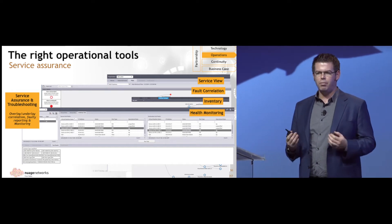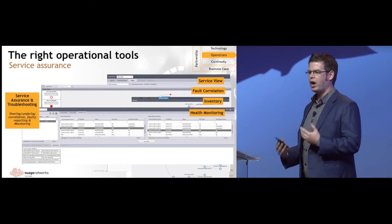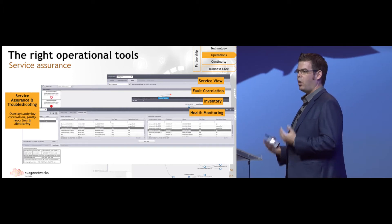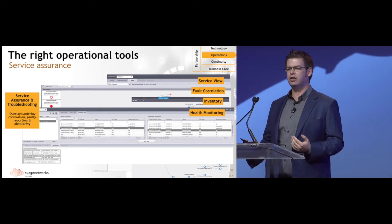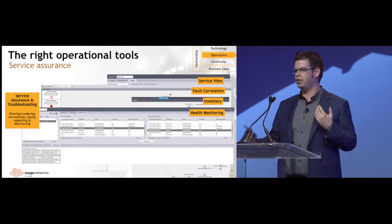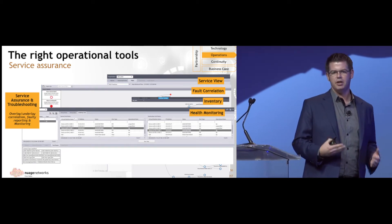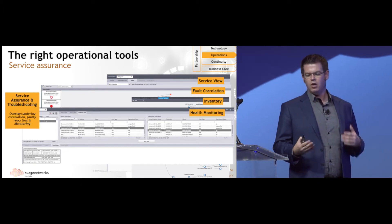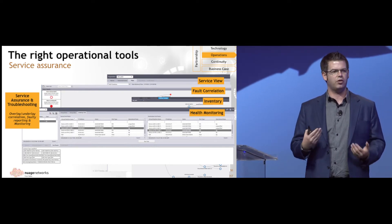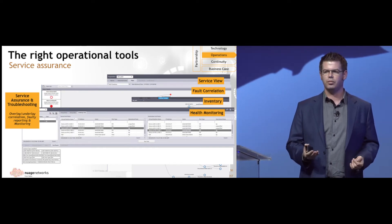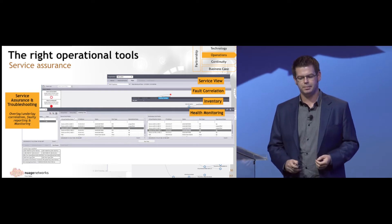What happens if a port goes down? What happens if a switch or a router fails? What's the impact on the overlay service? Why did the overlay, with its own performance monitoring, choose to switch a path in the night? Well, it could have been because there was a fiber cut or a router was taken out of service for maintenance. We can go back in time and identify this.